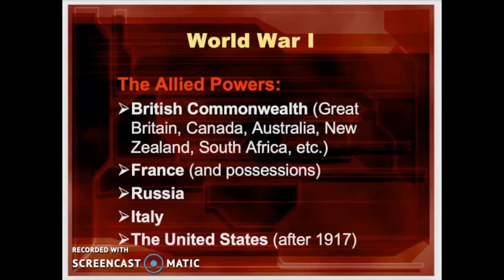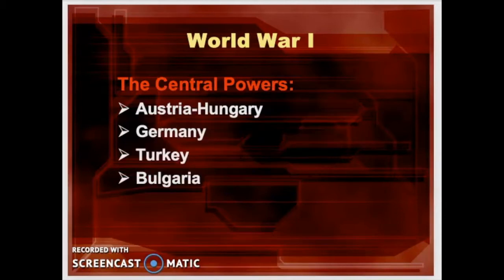Up to that point, Germany had been slowly winning in the West. Germany had won in the East and signed a separate peace treaty with Russia, moving all forces west and beginning to crush the Allied powers — until the United States arrived and the situation reversed. The central powers included Austria-Hungary, which encompassed Austria, Hungary, what we think of as Yugoslavia, Romania, Serbia, Germany, Turkey, and Bulgaria.